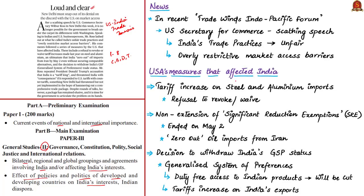Recently, the Trade Winds Indo-Pacific Forum concluded in New Delhi. In this forum, the US Secretary of Commerce visited India along with a 100-member business delegation. In this meeting, the US Secretary of Commerce spoke about his concerns regarding India's unfair trade practices and the barriers created by India, which are restricting US companies from accessing Indian markets. The editorial content has been rearranged into four sub-sets.